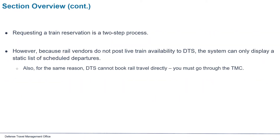Requesting a train reservation is a two-step process. However, because rail vendors do not post live train availability to DTS, the system can only display a static list of scheduled departures. Also, for the same reason, DTS cannot book rail travel directly. You must go through your travel management company, or your TMC.